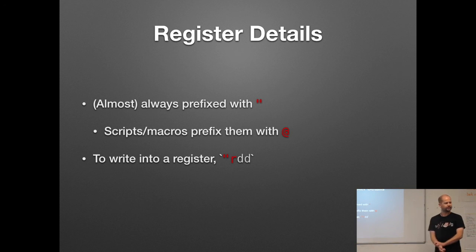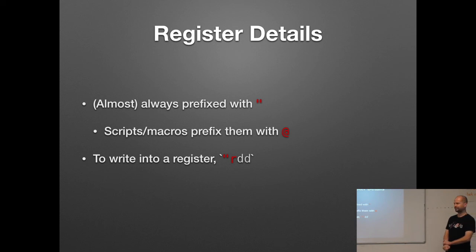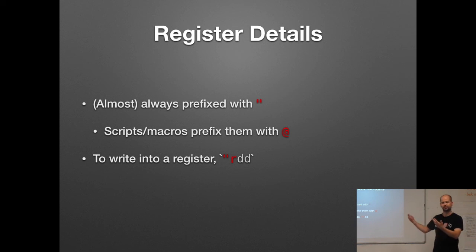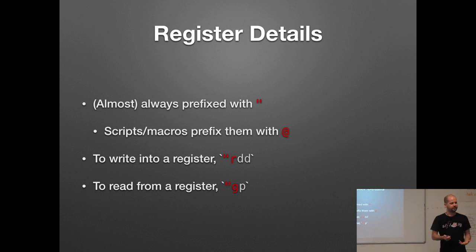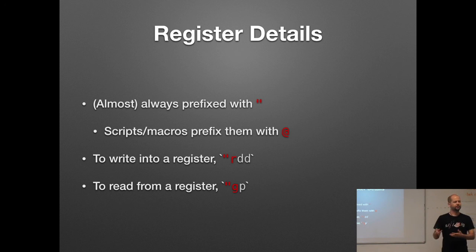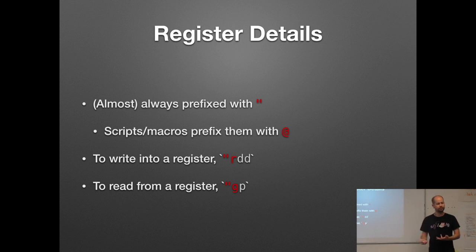You can get to registers in insert mode, but it's more complicated. In Normal mode you just press a double quote character. To read from a register, you do the same thing: prefix with a double quote, name the register you want to read from, then your command. In this particular case, we'd be reading out of the G register.